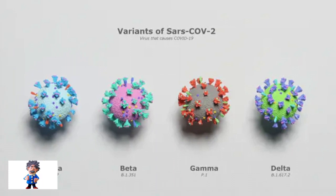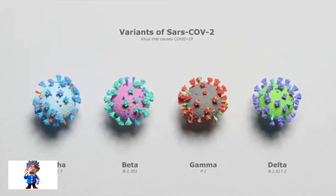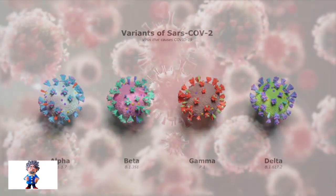Contrary to scientific predictions, the Omicron variant has emerged from the mid-2020 strain and not from the Delta variant.